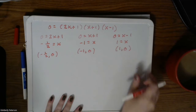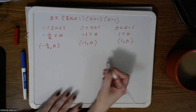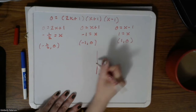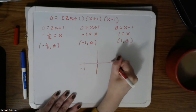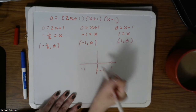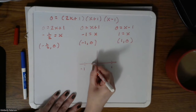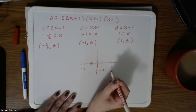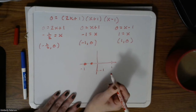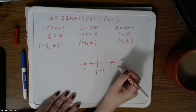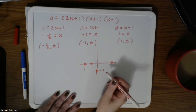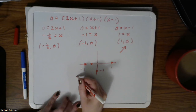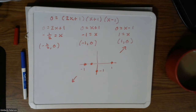Writing as ordered pairs: (negative one half, 0), (negative 1, 0), and (1, 0). Let's recap our first three steps. We now know the graph passes through those three x-intercepts and the y-intercept of (0, negative 1), with end behavior going up to the right and down to the left. Now we need our sign chart.